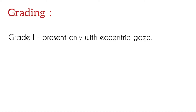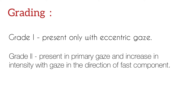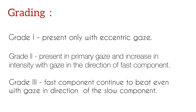There are 3 grades of nystagmus. Grade 1 is when nystagmus is present with eccentric gaze. In grade 2, it is present in the primary gaze and increases in intensity with the gaze in the direction of the fast component. In grade 3, the fast component continues to beat even with the gaze in the direction of the slow component.